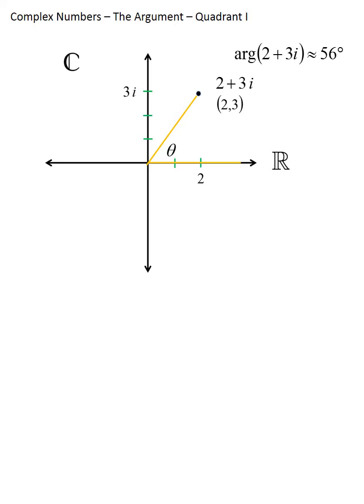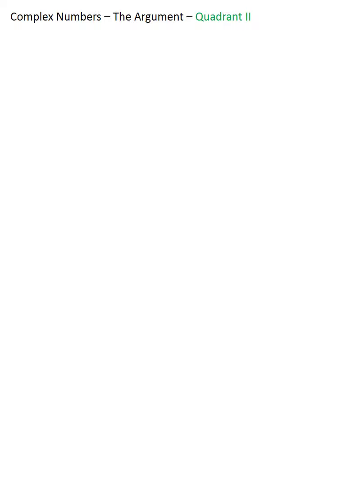Complications can arise when we look at Quadrant 2, 3, or 4, because in those quadrants coordinates have negative numbers in them. For the remainder of this video, let's look at how we can deal with those negative numbers effectively and still find the argument of the complex number.